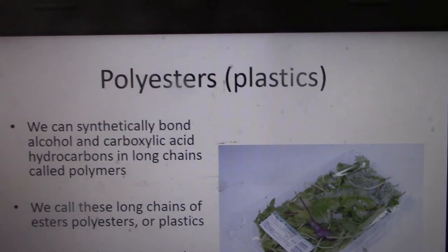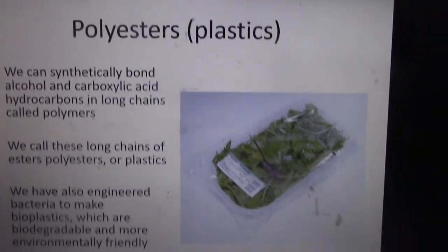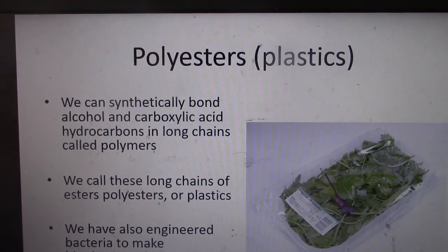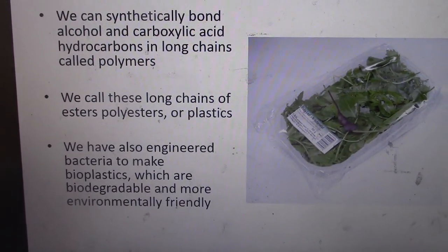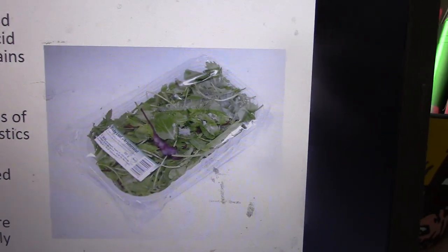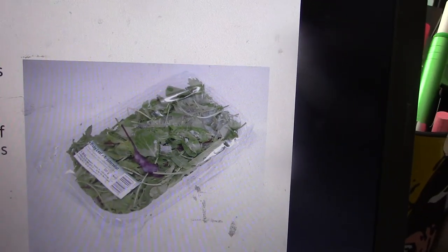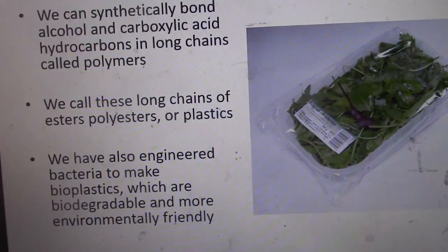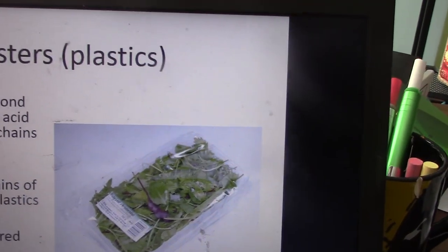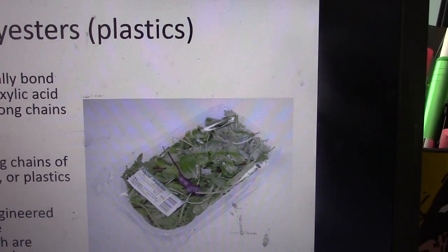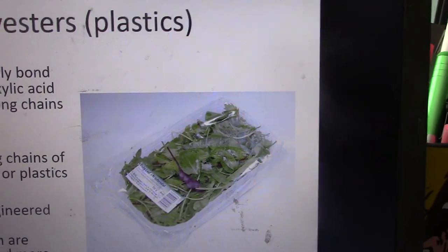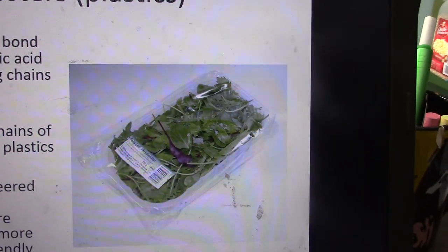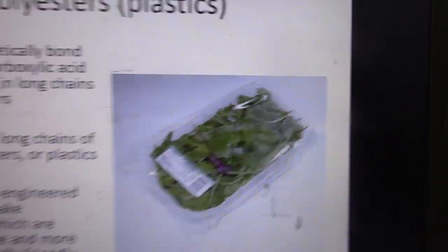You can have many esters bonded together to make polyesters — 'poly' means many. We can synthetically bond alcohols and carboxylic acids in long chains, and this is what makes plastic. For example, cellulose acetate is a biodegradable plastic. We've engineered bioplastics this way, so some of our egg carton-type plastics are actually biodegradable.